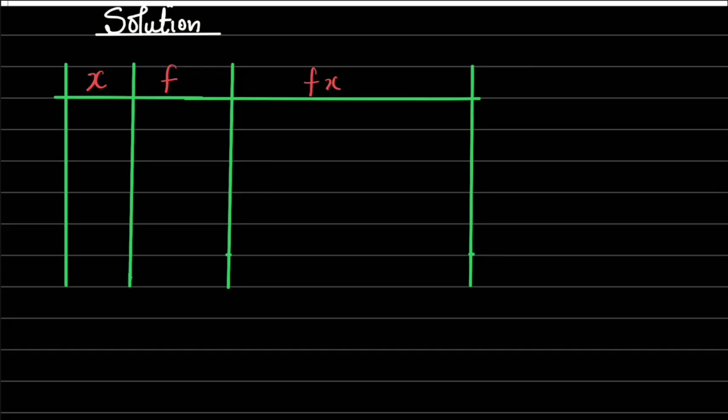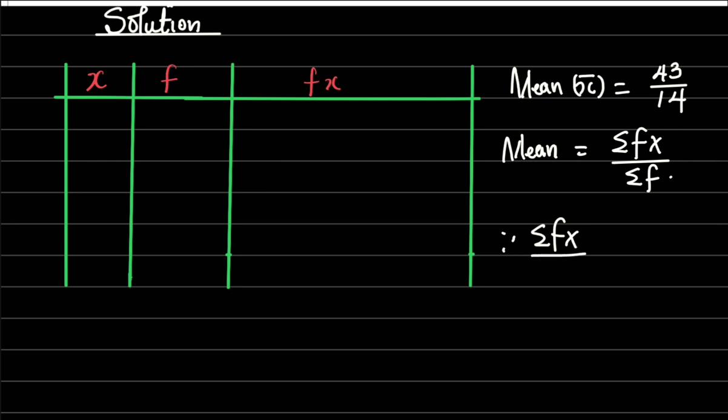Now check out my table. Before we do anything, let me lead you to this. We've been given the mean. The mean is equals to 43 all over 14. Now we know that mean has the formula summation fx all over summation f. It therefore means that summation fx all over summation f must be equals to 43 over 14. Now we move to the table. On the table we are going to work it out so that we can get the expression for summation fx over summation f.